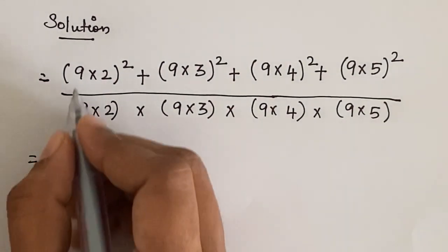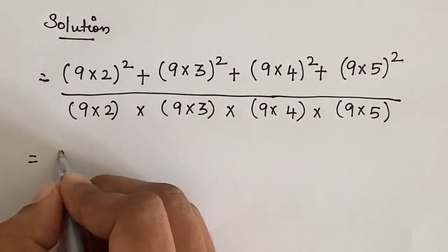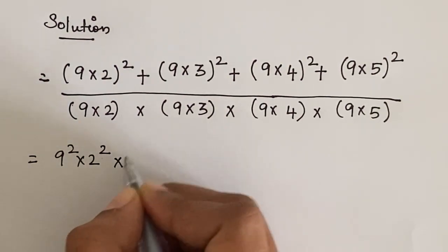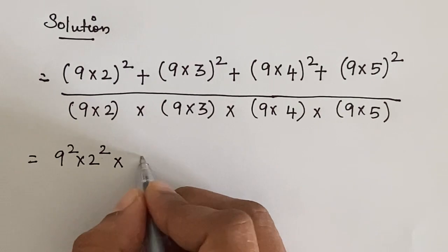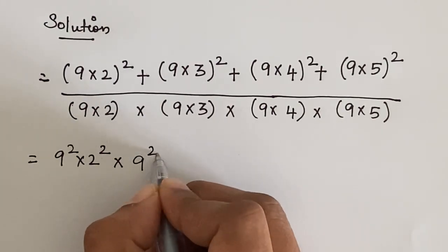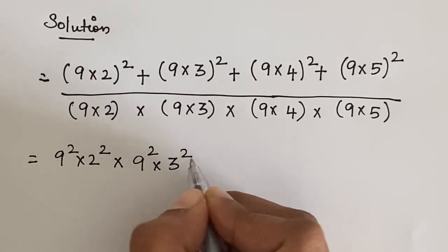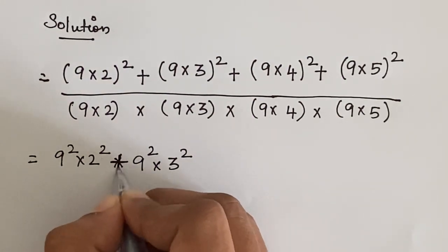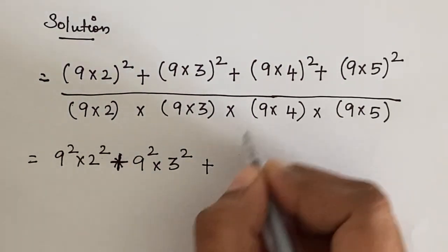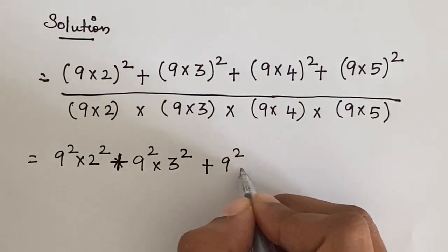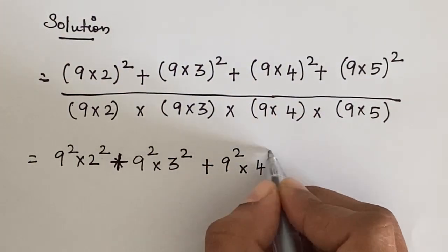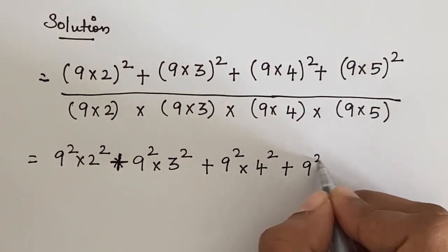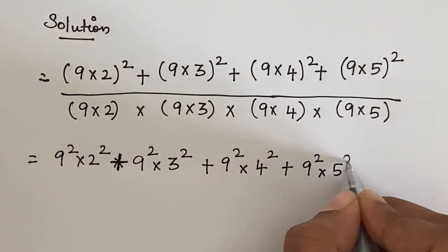Which is equal to: (9 times 2) whole squared can be written as 9 squared times 2 squared, plus (9 times 3) whole squared as 9 squared times 3 squared, plus (9 times 4) whole squared as 9 squared times 4 squared, plus (9 times 5) whole squared as 9 squared times 5 squared.